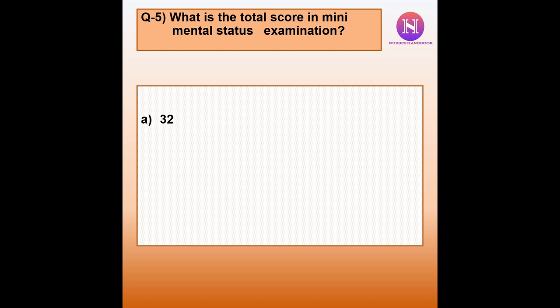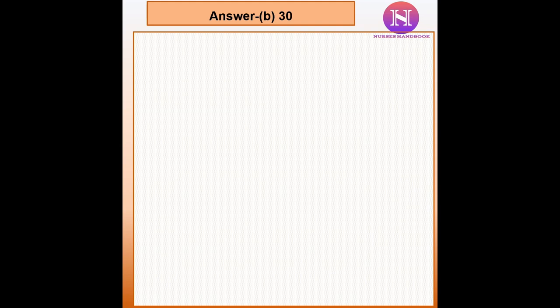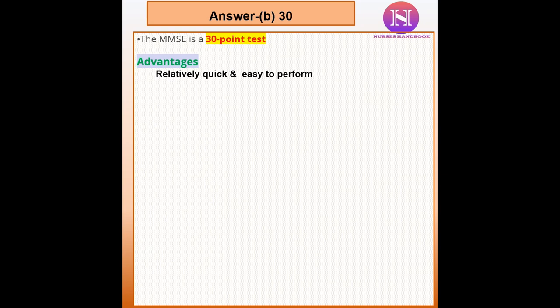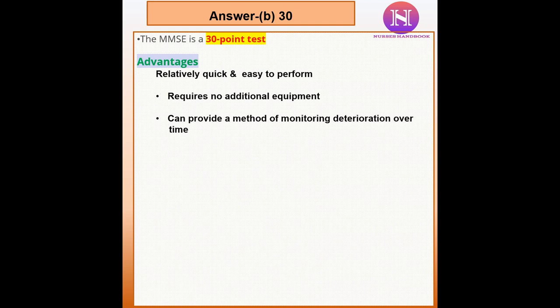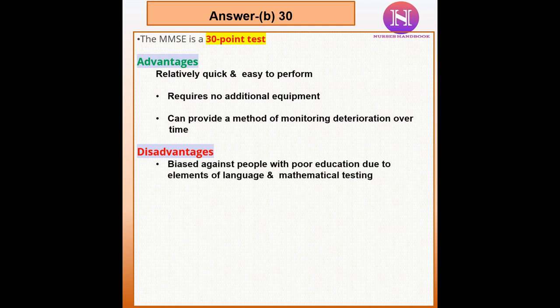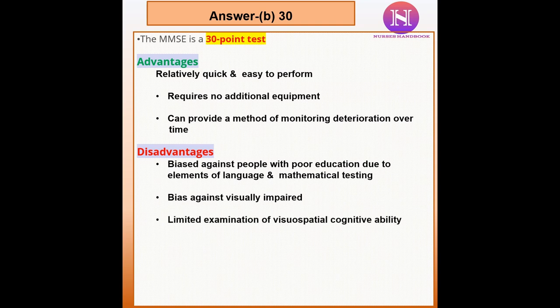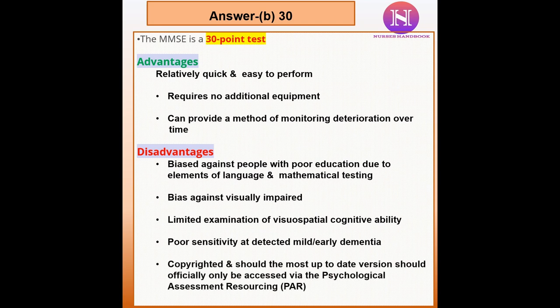Question 5: What is the total score in the Mini Mental Status Examination? a. 32, b. 30, c. 20, d. 25. The correct answer is b — 30. It is a mini form of mental status examination, also known as the Folstein test, used to measure cognitive impairment. Advantages: it is quick and easy, requires no additional equipment, and monitors deterioration. Disadvantages: bias against people with poor education or visual impairment, limited visuospatial assessment, and poor sensitivity for mild or early dementia.